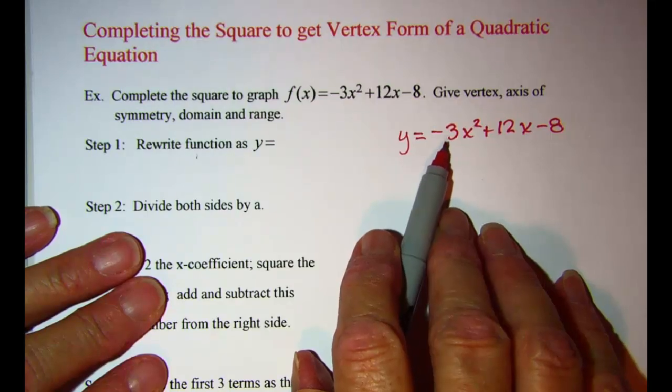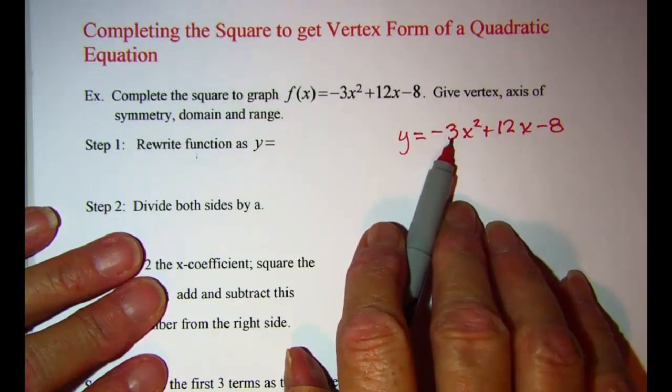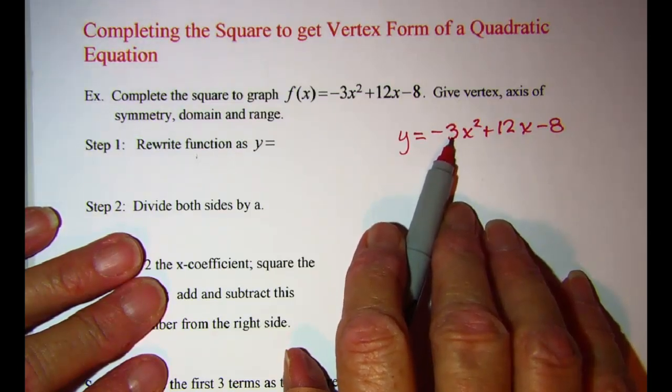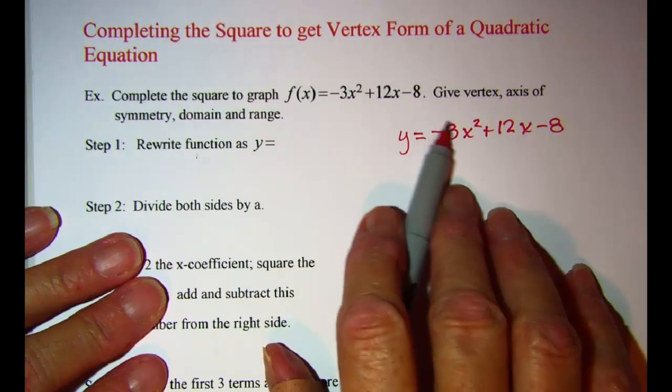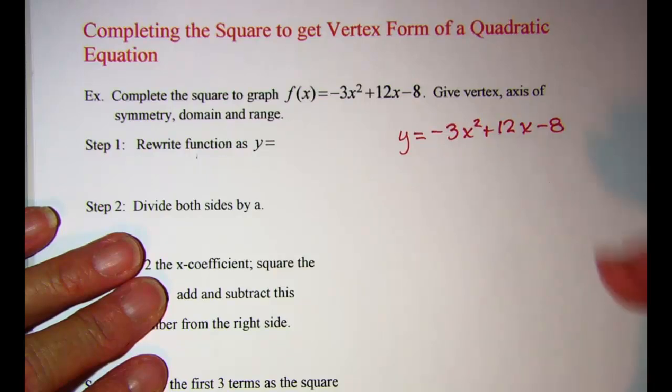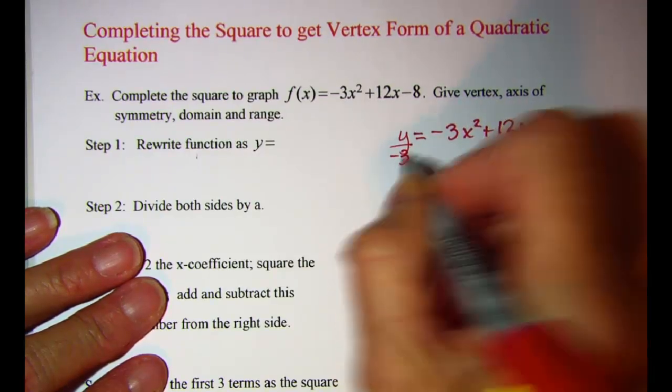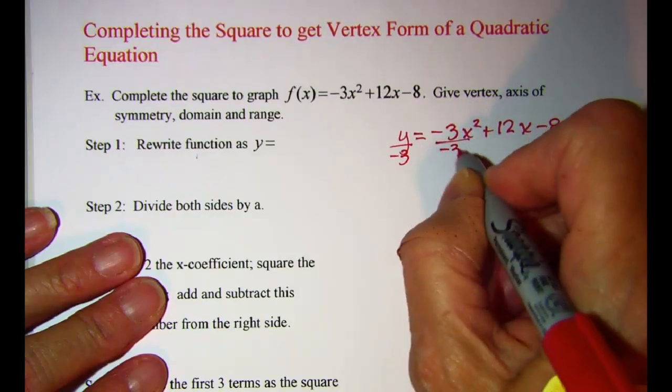We cannot complete the square unless the coefficient of x squared is 1. It's very important to remember you have to have a 1 here. You can't do it if it's a number other than 1. I'm going to divide every term by negative 3.